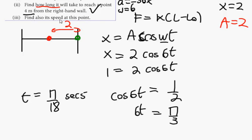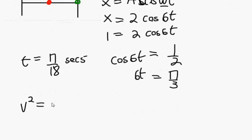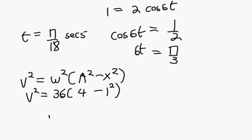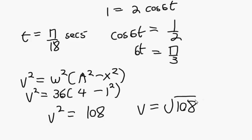This one here. Find also its speed at this point. What formula will get you to speed at any given x value? v squared equals omega squared, A squared minus x squared. v squared is what we're looking for. Omega squared is six squared, which is 36. Amplitude squared is two squared, which is four. Our x value is one squared. v squared will then equal 3 times 36, which is 108. Our v value, therefore, would be the square root of 108. Everybody happy enough with that?